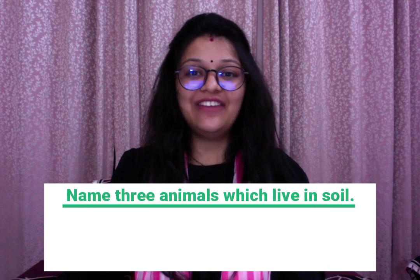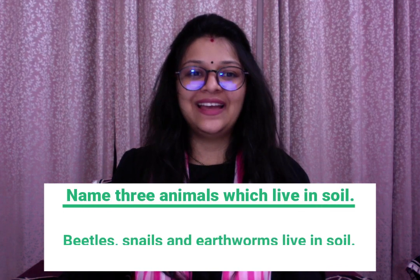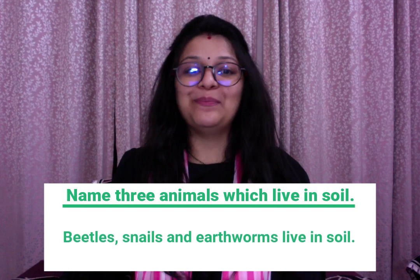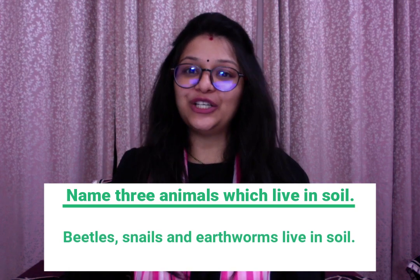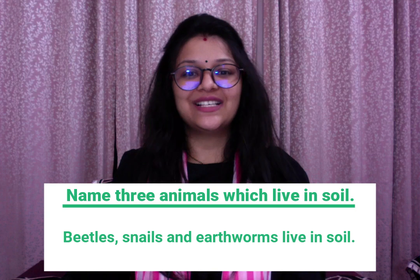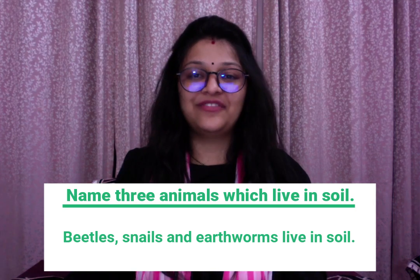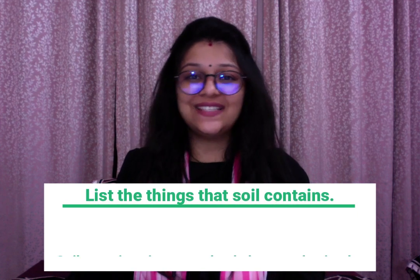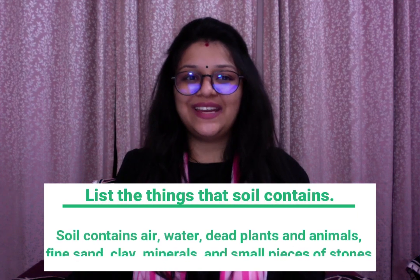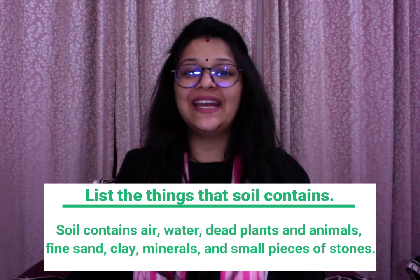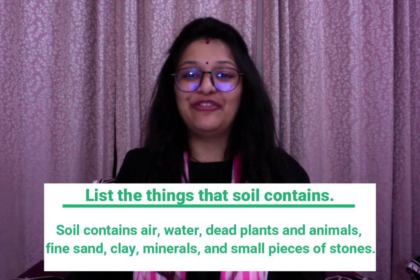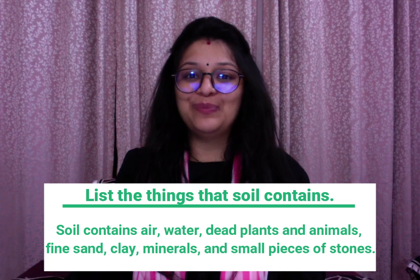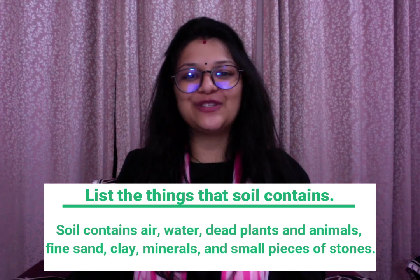Fourth question: name three animals which live in soil. Answer: beetles, snails and earthworms live in soil. Fifth question: list the things that soil contains. Answer: soil contains air, water, dead plants and animals, fine sand, clay, minerals and small pieces of stones.